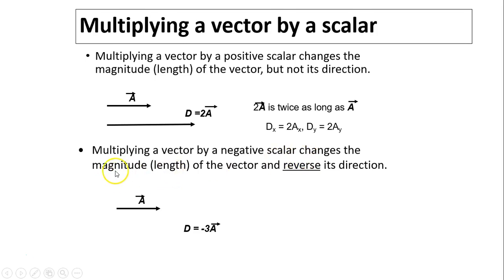What if you multiply a vector by a negative scalar quantity? Now the magnitude changes by the same factor, but the direction is reversed. For example, D equals negative 3A. The direction has to be opposite to A, magnitude is 3 times as big. Negative 3A is 3 times as long as A and points in the opposite direction. You multiply each component by negative 3.